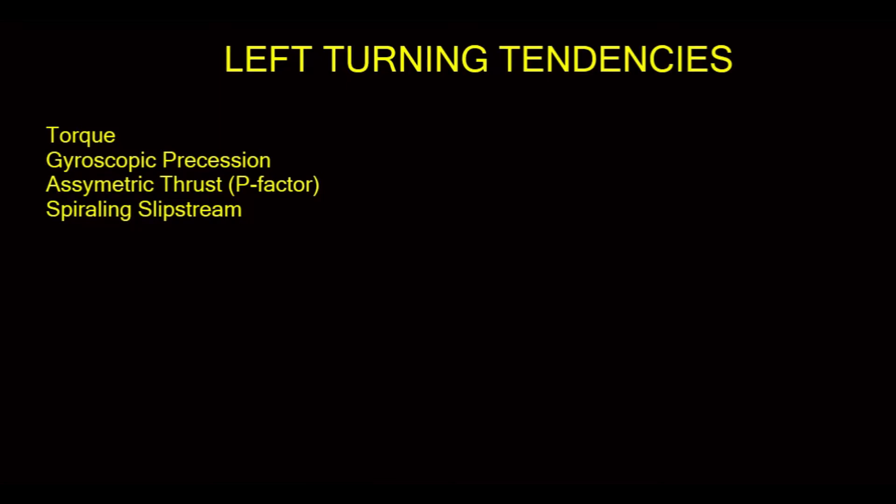We're going to talk about four left turning tendencies of aircraft. I've listed them here. Torque, gyroscopic precession, asymmetric thrust, or P-factor, and spiraling slipstream.